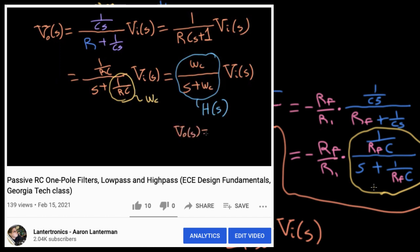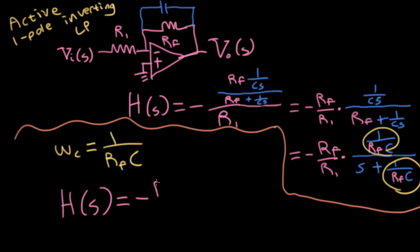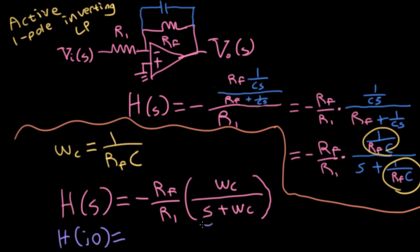I'm going to multiply the numerator and the denominator by S in order to stick an S in this spot. And the other thing I'm going to do is divide the numerator and the denominator by RF. So I'll have 1 over RF times C. Then down here, I'll have plus 1 over RF times C. And now this form here should look a little bit familiar. It's that one pole transfer function that we saw for the passive filter. So let's let omega C here equal 1 over RF C. And then we can write our transfer function as minus RF over R1 times omega C over S plus omega C.